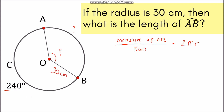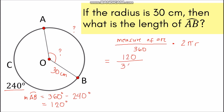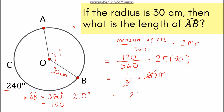Since the whole circle measures 360 degrees, to solve for arc AB we subtract 240 from 360 degrees, giving us 120 degrees. Now substituting into the formula: 120 over 360, multiplied by 2πr, where r is 30. Simplifying, we get 1/3 multiplied by 60π, and the answer is 20π.